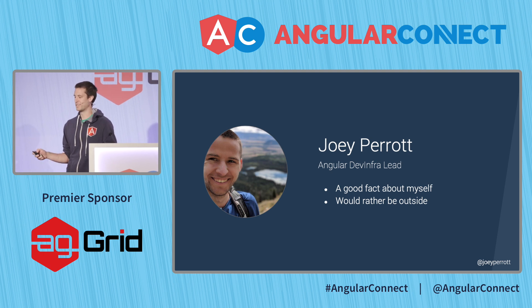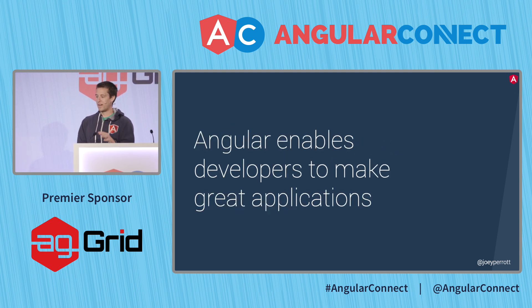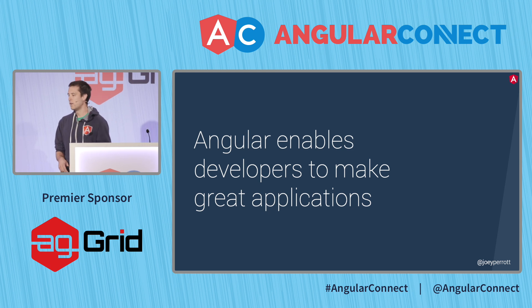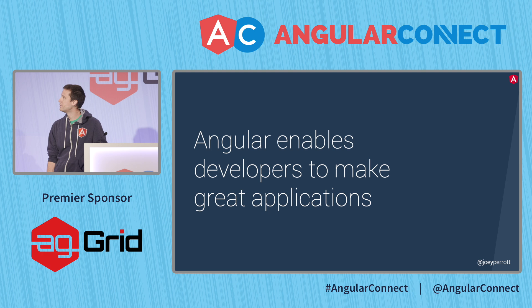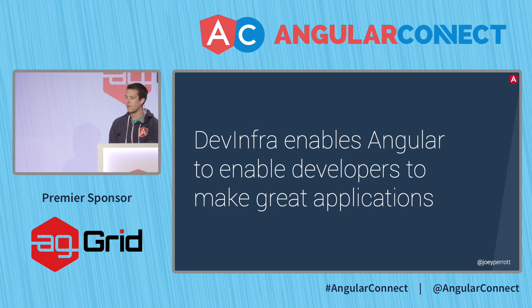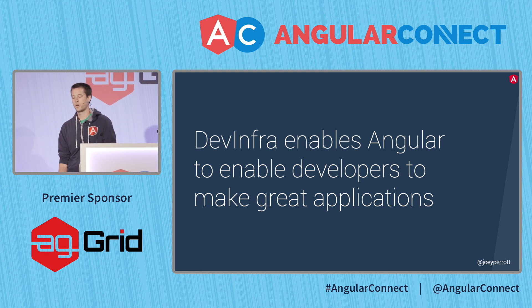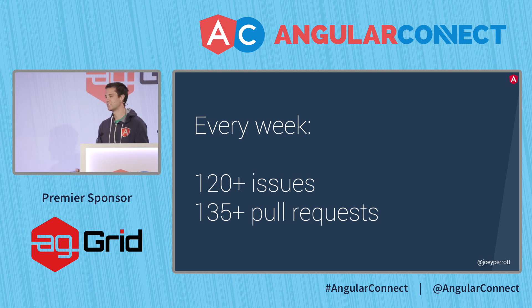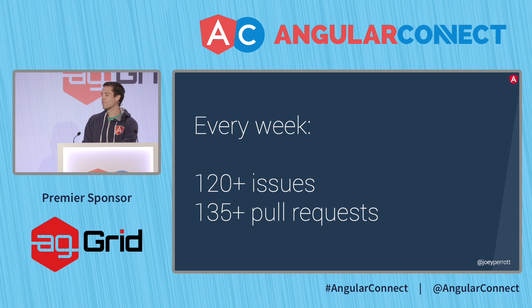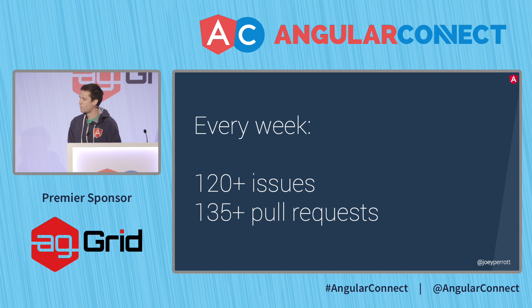Before we look at what we do to manage things, I want to talk a bit about what DevInfra means to me. Part of Angular's goal is to enable developers to make great applications. DevInfra enables Angular to enable developers to make great applications. We do this by making the people who make Angular as efficient as possible with our tooling and processes. We're pretty busy on GitHub — every week we receive more than 120 issues and 135 pull requests, and we need to be as efficient as possible to get through all of these.